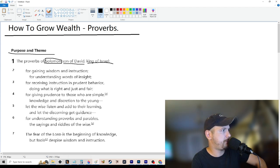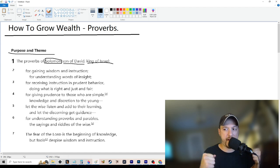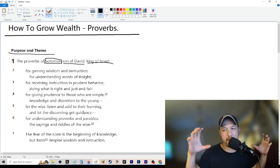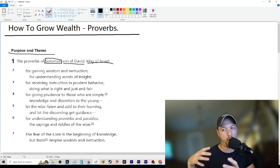Second line: for gaining wisdom and instruction for understanding words of insight. This is the purpose and the theme. So the purpose and theme of Proverbs - for gaining wisdom and instruction for understanding words of insight. Wisdom is what you do with facts to derive value. Like it's like applying facts to an objective to get a desired result. Like what you ought to do. That's what wisdom is. Like it's not just the facts and learning the world. But wisdom is like what you ought to do.